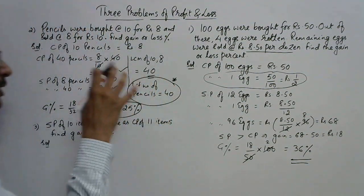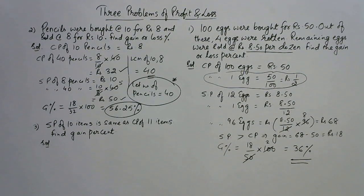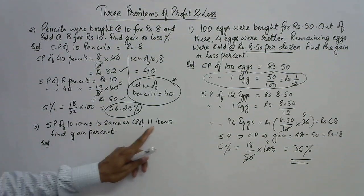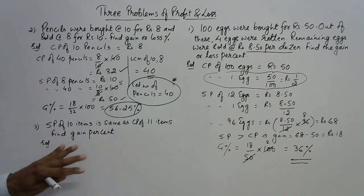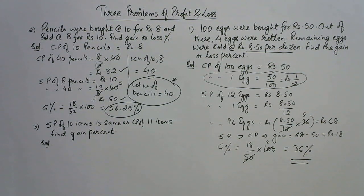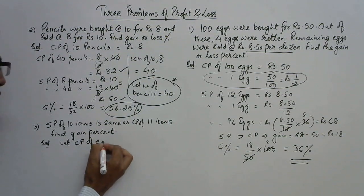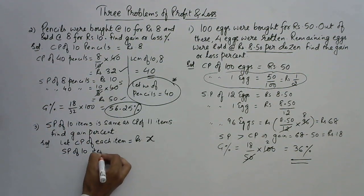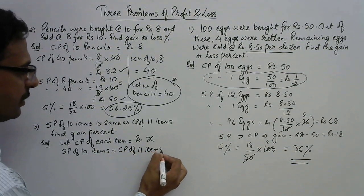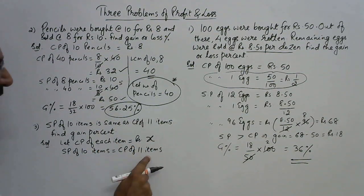The third question: the selling price of 10 items is the same as the cost price of 11 items. I'll take up the traditional method because understanding results from the traditional method, after which you can go for the shortcut trick. Assume the cost price of each item is rupees x. The condition given is SP of 10 items equals CP of 11 items. Since CP of each item is x, CP of 11 items is 11x.